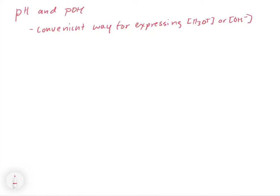In this video we're going to talk about pH and pOH. It turns out that pH and pOH represent a simple mathematical operation which converts a concentration that can span a large range — from 1 molar all the way to 1 times 10 to the minus 7th molar, or all the way down to 1 times 10 to the minus 14th molar.